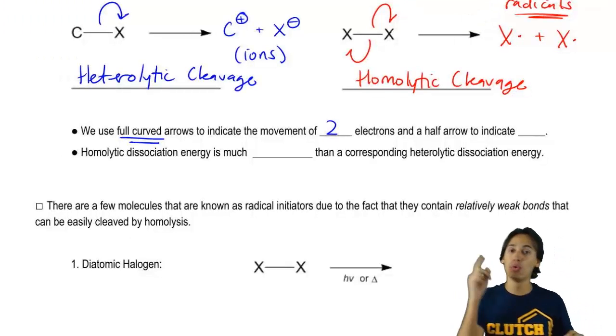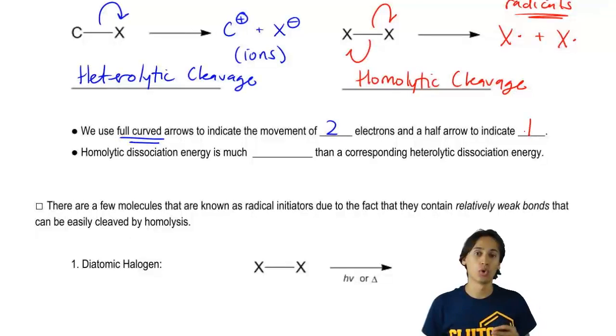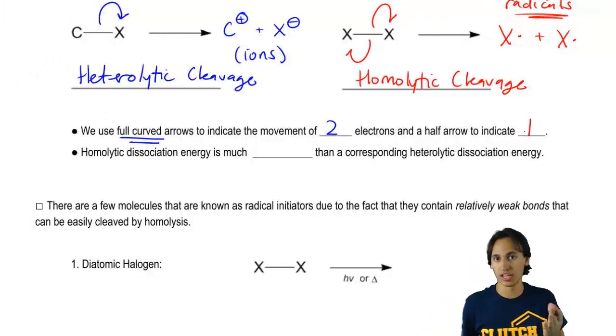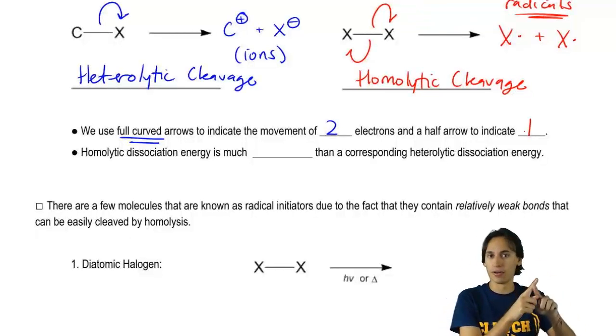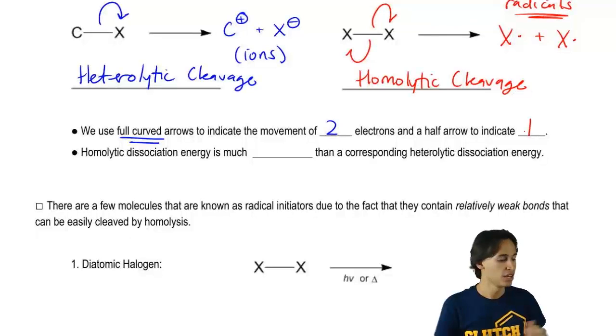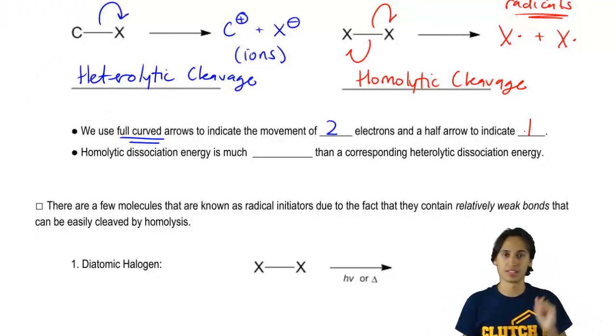When we want to only show that one electron is moving, we would use a half headed arrow or what is sometimes called a fish hook arrow because it's only got half of the arrowhead on it like I used on the X's.